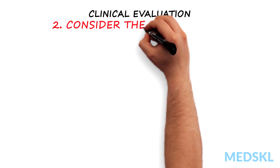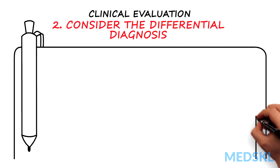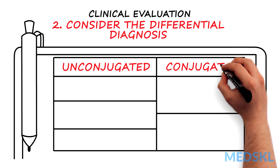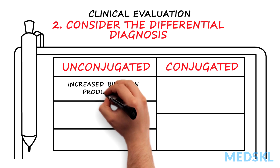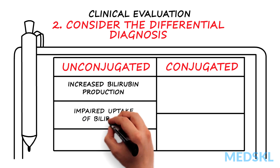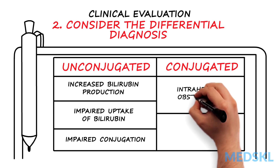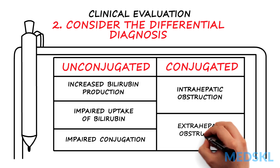Second, consider the differential diagnosis. One way to categorize the causes of jaundice is by looking at whether the high bilirubin is predominantly unconjugated or conjugated. High levels of unconjugated bilirubin can be due to increased bilirubin production secondary to hemolysis, impaired uptake of bilirubin by the liver, or due to impaired conjugation of bilirubin within the liver. High conjugated bilirubin levels can be due to intrahepatic diseases, such as hepatocellular or cholestatic liver disease, or extrahepatic bilirubin obstruction.